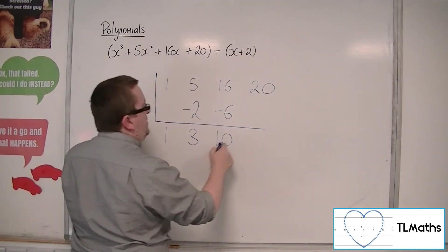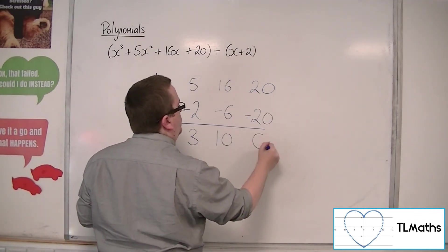Minus 2 times 10 is minus 20. Add them together, we get 0.